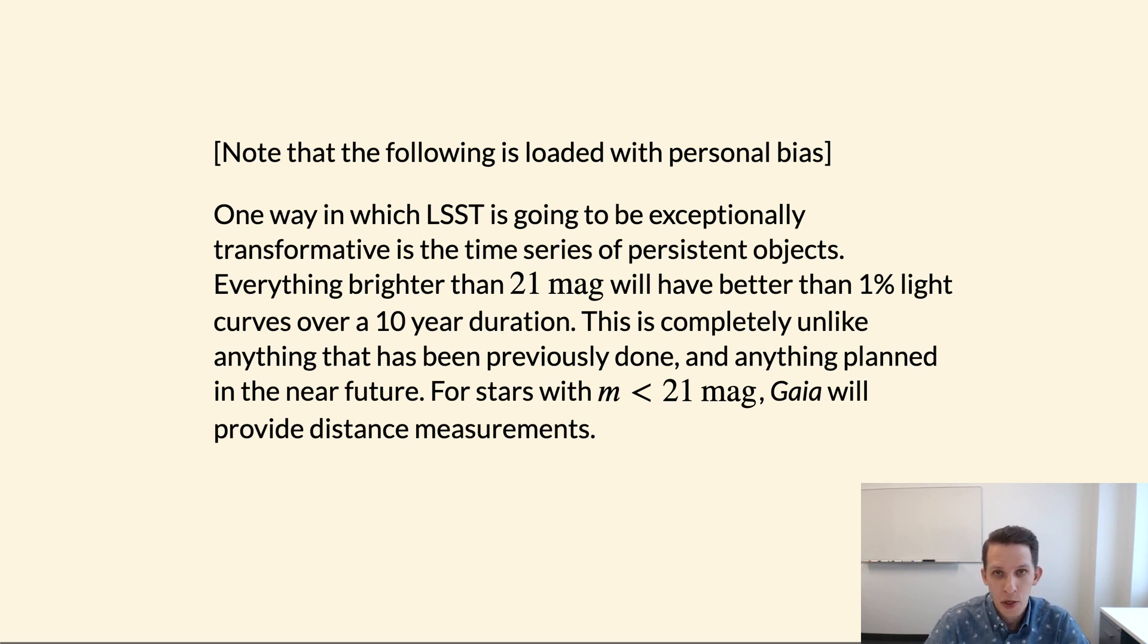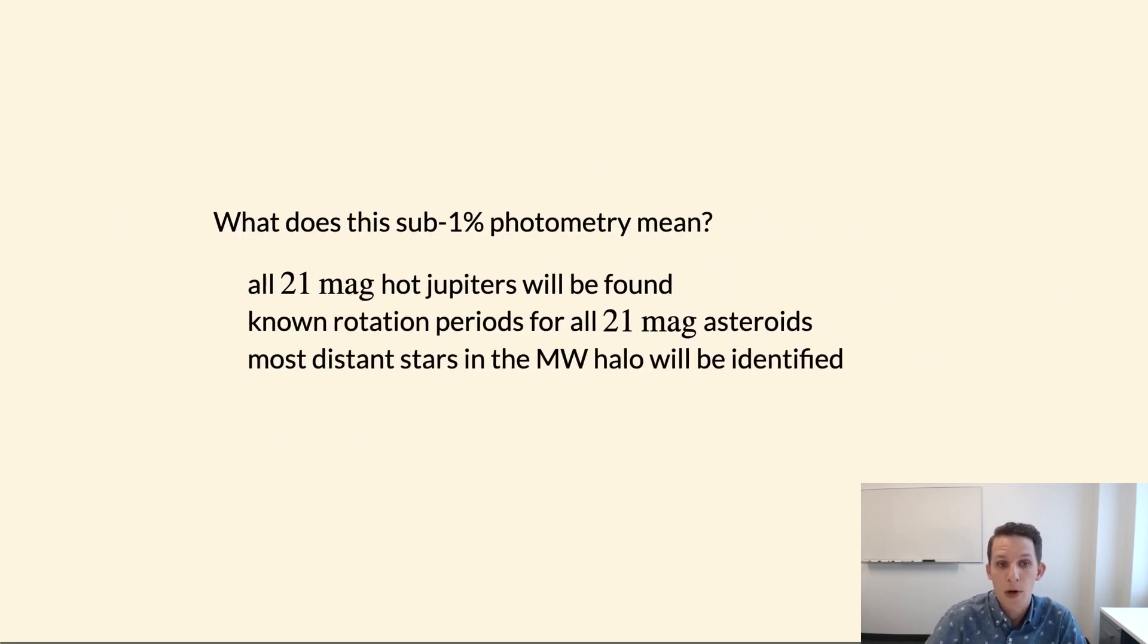And that photometry is going to be measured over a duration of 10 years. This is completely unlike anything that has ever been done before. It's also unlike anything that anyone is planning at the moment. Furthermore, any star that is that bright will also have a relatively accurate distance measurement from the Gaia satellite as well. So we're talking about unprecedented access to measurements of distance and variability for a huge swath of stars throughout our galaxy. I think this is an incredibly intriguing dataset that's going to be very, very valuable, not just during the Rubin Observatory, but even afterwards as well as a legacy for that project.